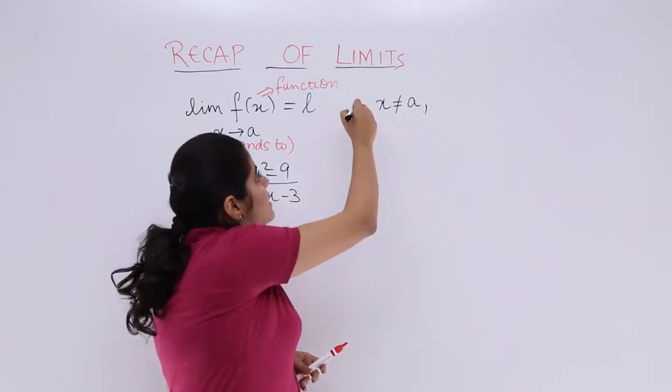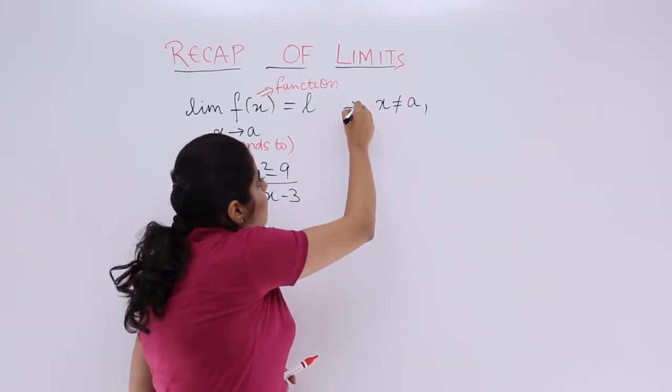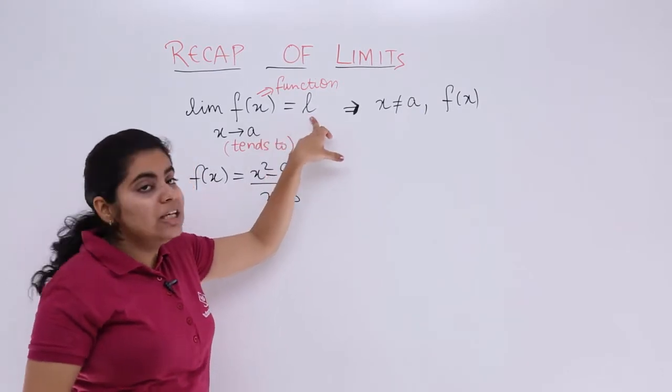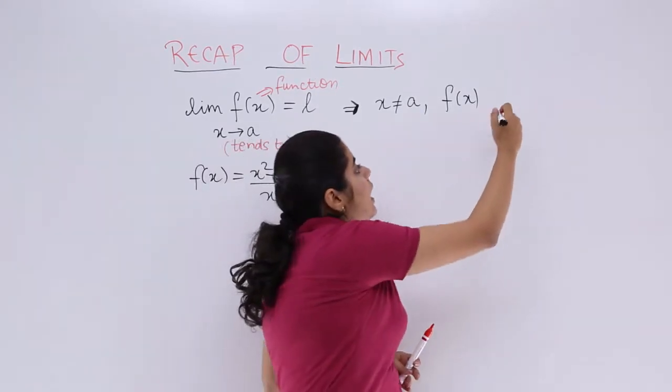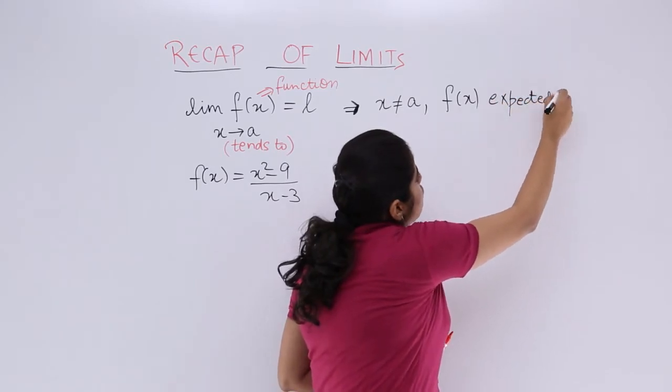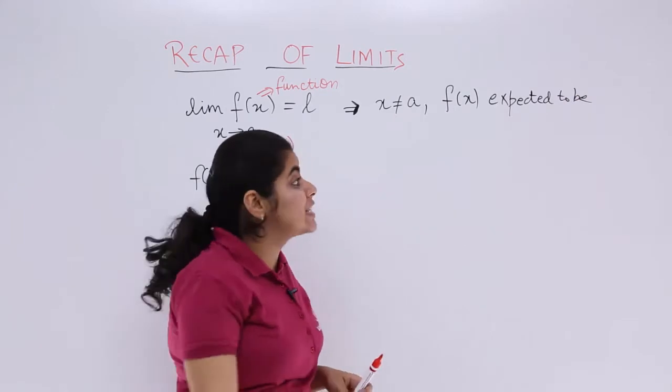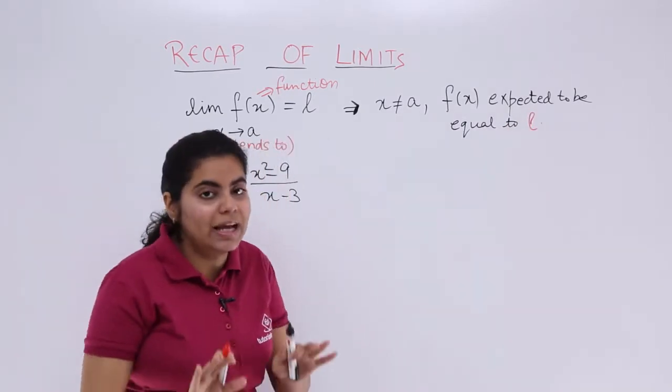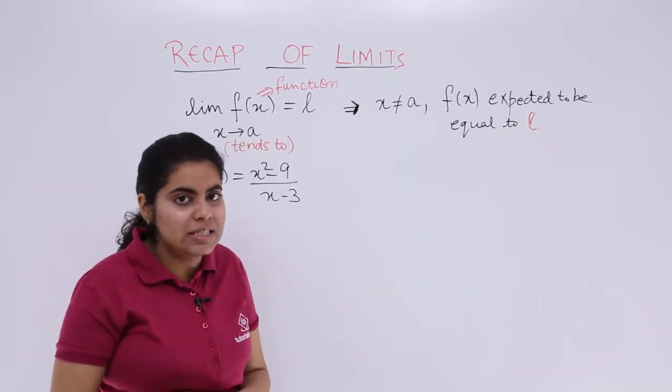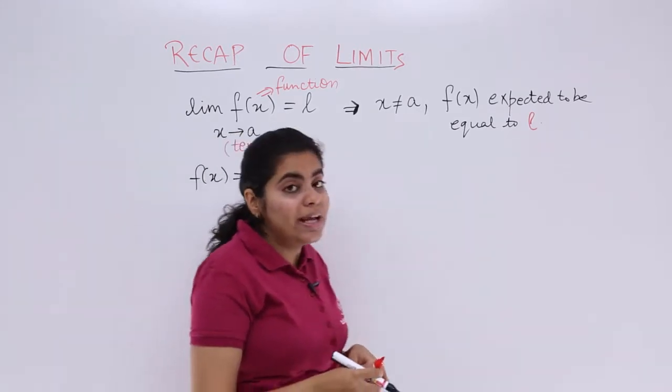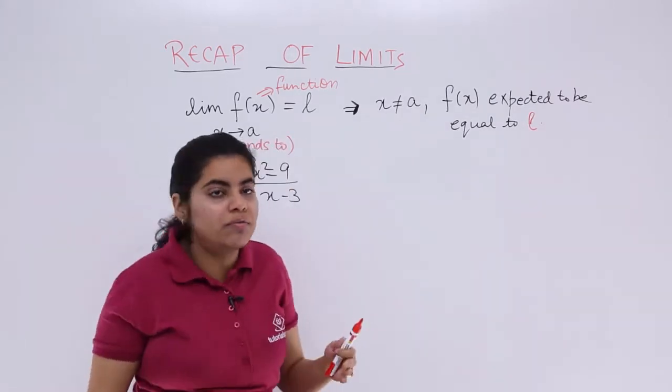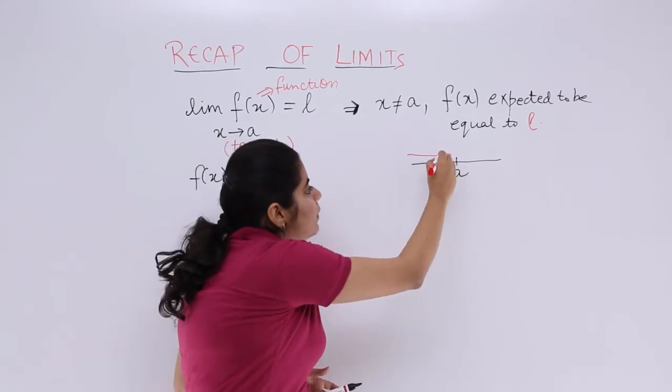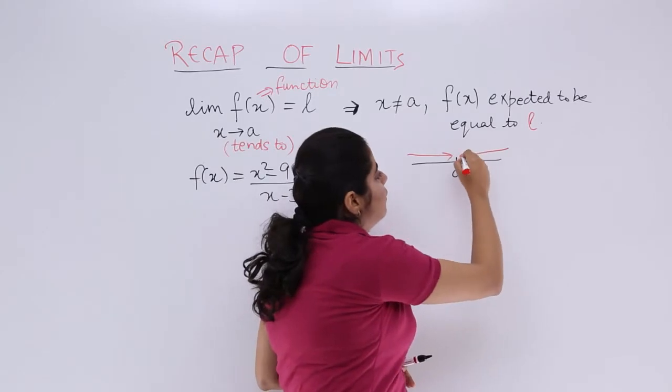What else does it mean? The function value is not actually equal to l. f(x) is expected to be equal to l but is not actually equal to l, which we already know from 11th class. We're talking about the neighborhood of a. I have a somewhere here, and I can reach a from the left-hand side as well as from the right-hand side.